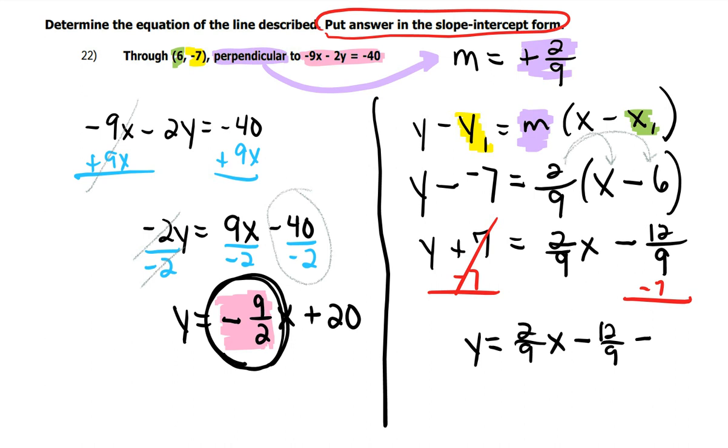7 is the same thing as 7 over 1. If I multiply it by 9 to get a denominator of 9, 7 times 9 would make the numerator 63. And negative 12 and a negative 63 is 75 9ths.